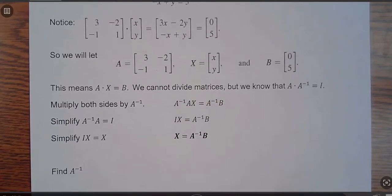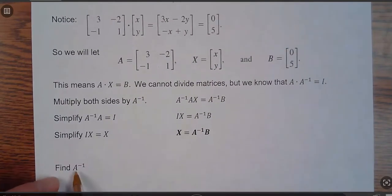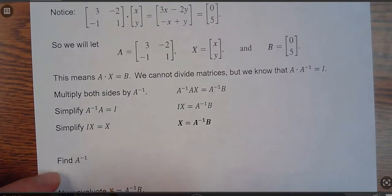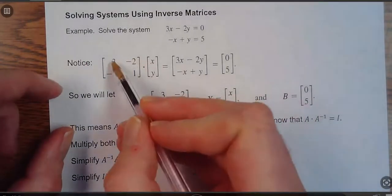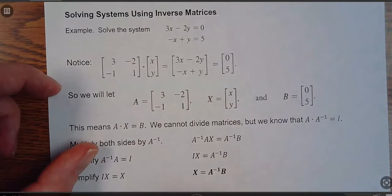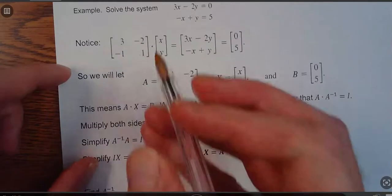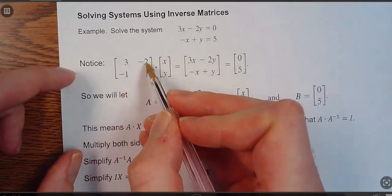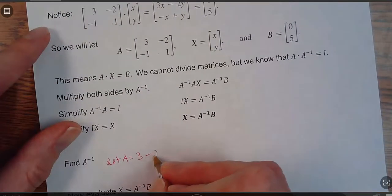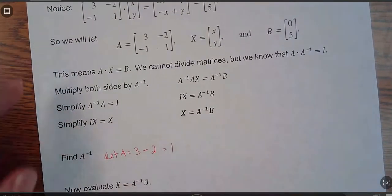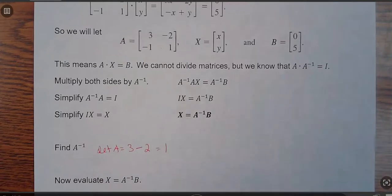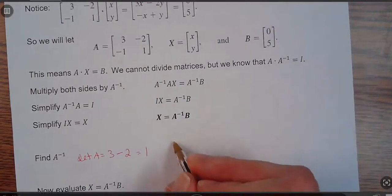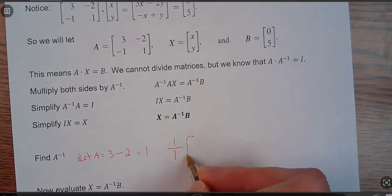Okay, so first off down here, I want to find the inverse. So if it's a 2 by 2, we start out by finding the determinant. So the determinant of A, A up here, so it would be 3 times 1 minus—so 3 times 1 is 3—minus, and then negative 1 times negative 2 would be 2. So that equals 1. So the determinant is 1.